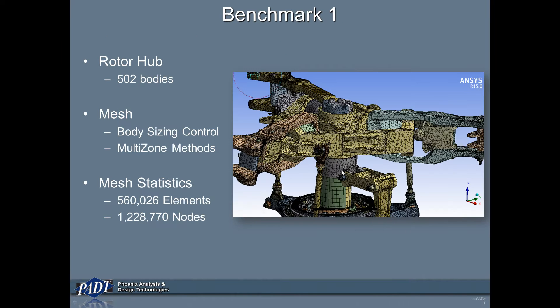I did two benchmarks to take advantage of the new capability and see what it had to offer in terms of speedup. The first model was a rotor hub with 502 bodies. I used some body sizing and multi-zone method controls to control the mesh, and I ended up with a mesh of about 560,000 elements and about 1.3 million nodes.